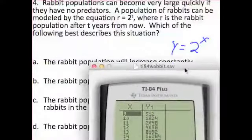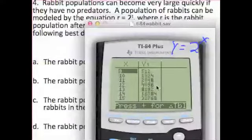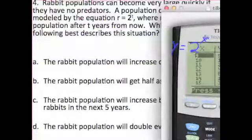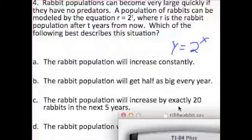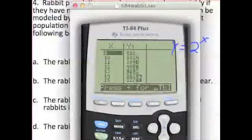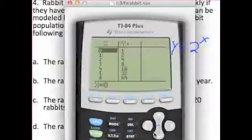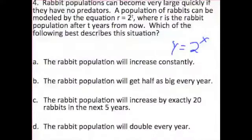Looking at the answer choices, the rabbit population will increase constantly. It doesn't. It jumps really quick. 512 to 1,024 to 2,048 to 4,096. It's doubling every single time. It's not adding a certain amount every single time. So A is not correct. The population will get half as big every year? No, it gets twice as big every year. The second to the last one, C, says the population will increase by exactly 20 rabbits in the next five years. Well, that's completely not true, because if you look at this, you'll notice from 0 to 5, it increased by exactly 32 rabbits in the first five years. So the last one is the rabbit population will double every single year. And if you notice, it does. 1, 2, 4, 8, 16, 32, 64. The population is doubling every single year. So D is the correct answer choice.